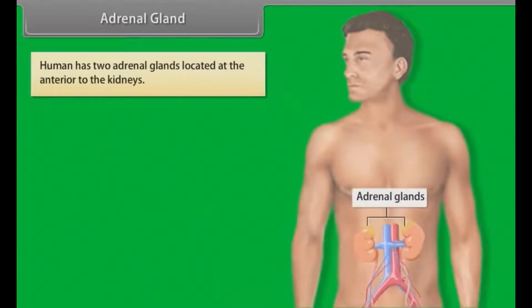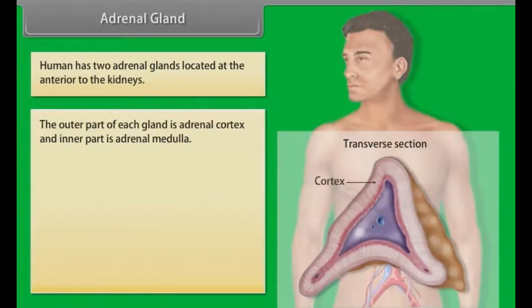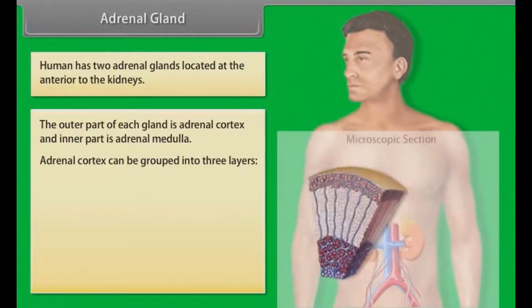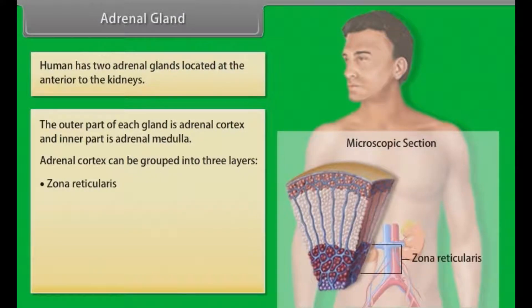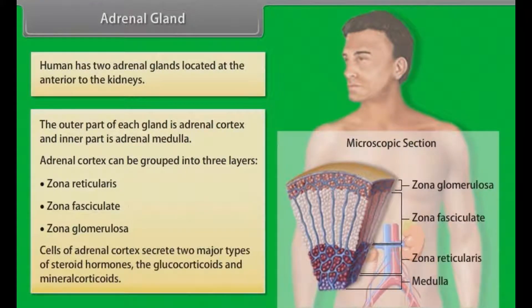Humans have two adrenal glands located anterior to the kidneys. The outer part of each gland is the adrenal cortex and the inner part is the adrenal medulla. The adrenal cortex can be grouped into three layers: zona reticularis, zona fasciculata, and zona glomerulosa. Cells of the adrenal cortex secrete two major types of steroid hormones: glucocorticoids and mineralocorticoids.